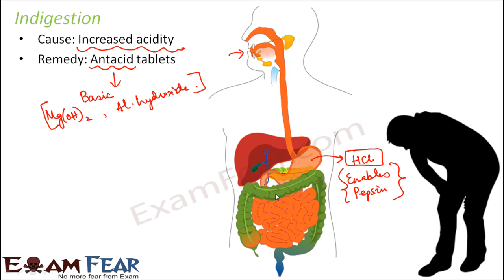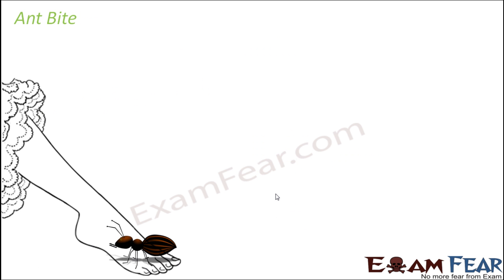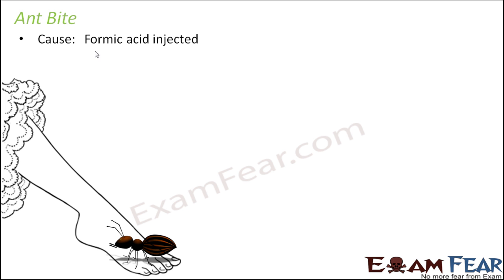So even inside our body, we have acids and bases working for proper functioning. Let's look at another example — have you ever come across somebody who has undergone an ant bite? When big ants bite you, some acid gets injected, and that is why the entire area gets swollen, it has a lot of pain, and sometimes the infection spreads to other parts of the body. What happens is these ants, when they bite, they actually inject formic acid inside your body. Due to the effect of that acid, all these side effects and consequences come up.